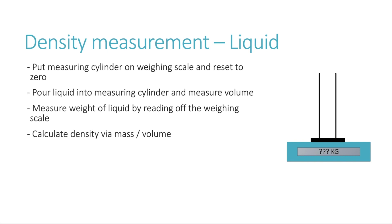To measure the density of a liquid, you need a weighing scale and a measuring cylinder. Place the measuring cylinder on the weighing scale and reset it to zero — this zeroes out the weight of the cylinder itself. Then pour the liquid you want to measure into the measuring cylinder. The measuring cylinder will tell you the volume of the liquid you've poured in.